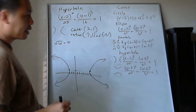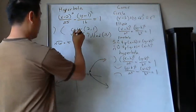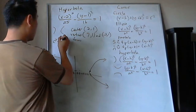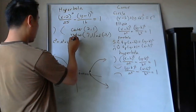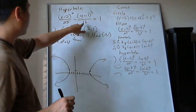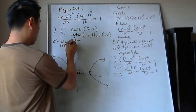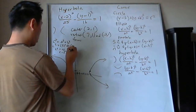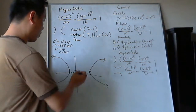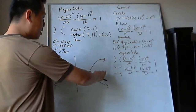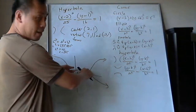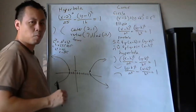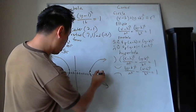Next, find the foci. For a hyperbola, c² = a² + b². In this case, that's 5² + 4² = 25 + 16 = 41, so c = √41. The foci are always inside the curves — if they end up outside, you've made an arithmetic error. √41 is about 6.5, so the foci are roughly 6.5 units from the center in each direction.